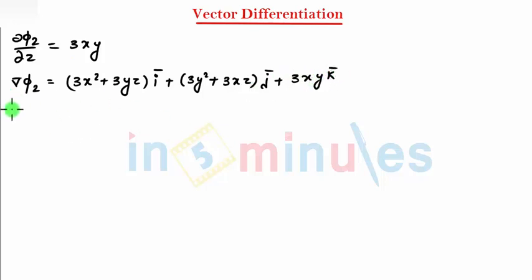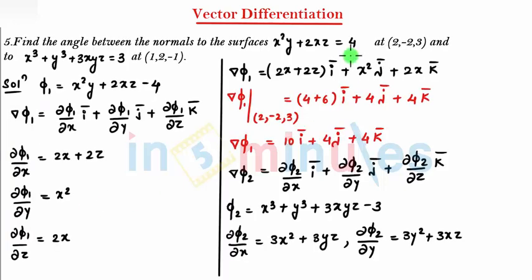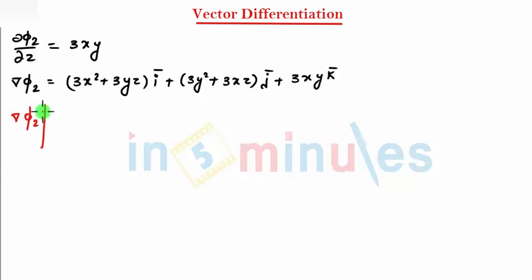So I got ∇φ2, but I want ∇φ2 at a point. My point is (1, 2, -1). When I substitute here it gives 3 - 3, and 2 becomes 6 for î, plus 3 times 2² which is 3 into 4, plus 3 where x is 1 and z is -1 for ĵ, plus 3 where x is 1 and y is 2 for k̂.